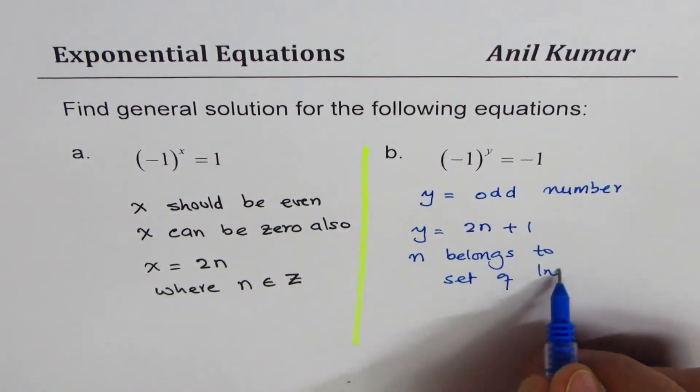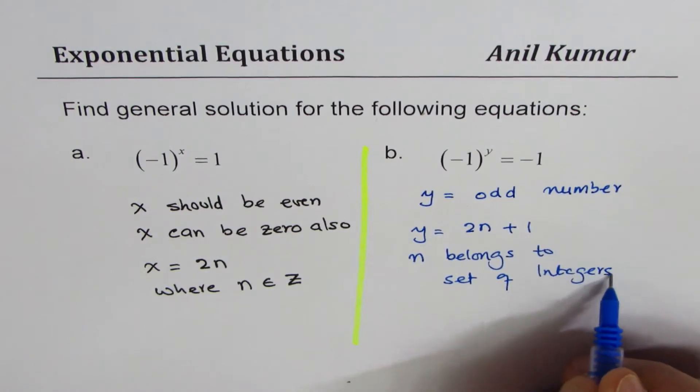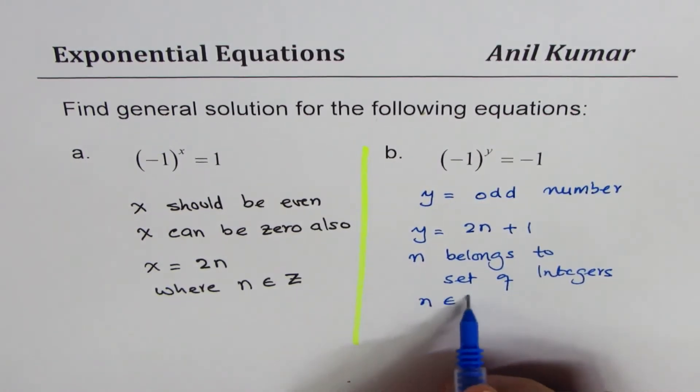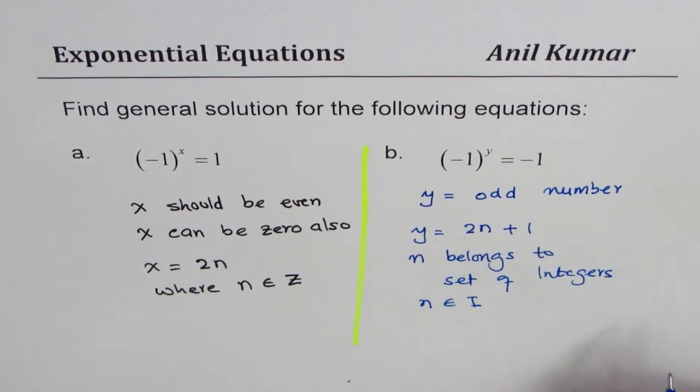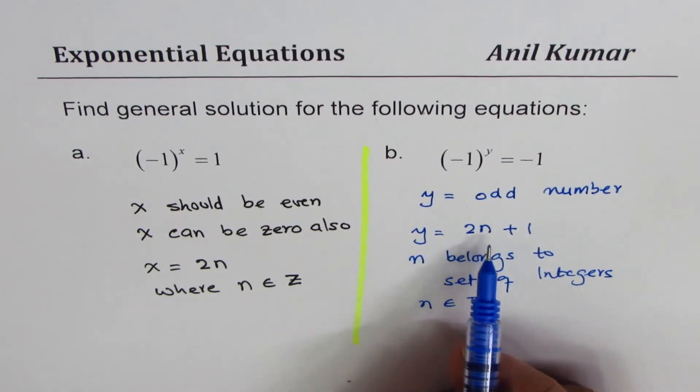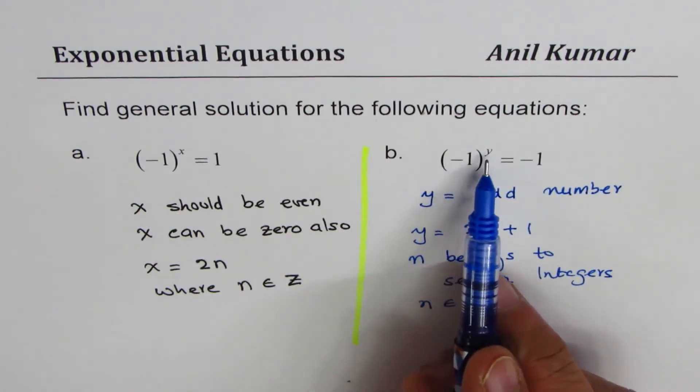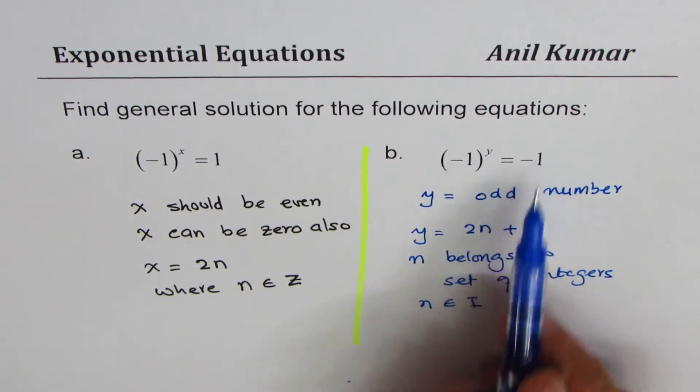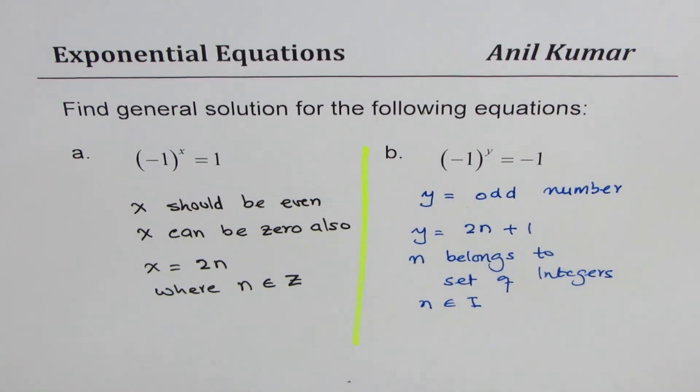the set of integers. You could write n ∈ I or Z, both are correct. In that case we'll get (-1)^y = -1, correct. So that is the general solution for part b.